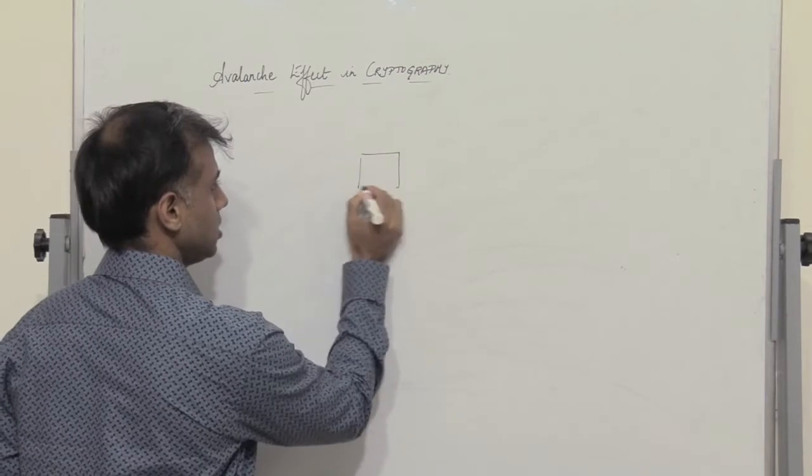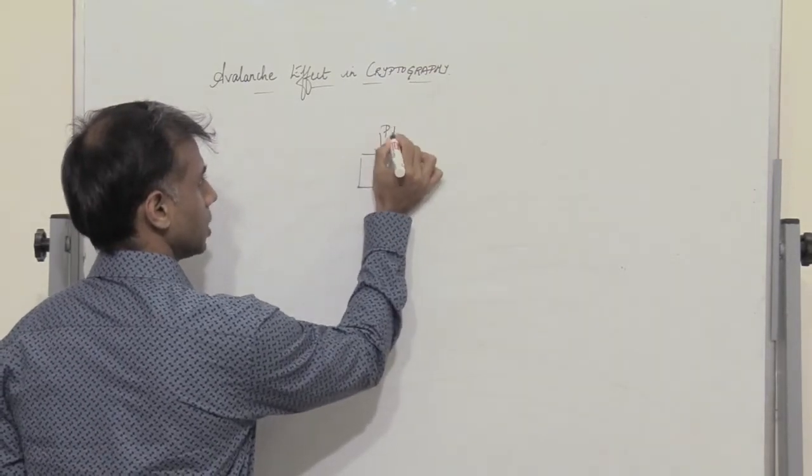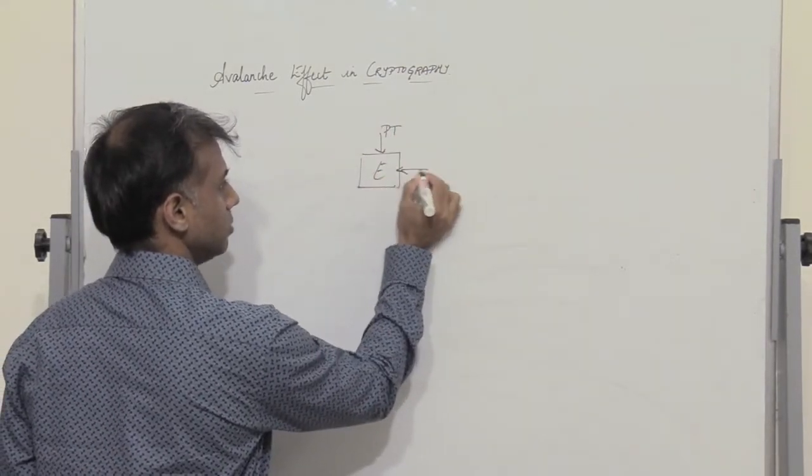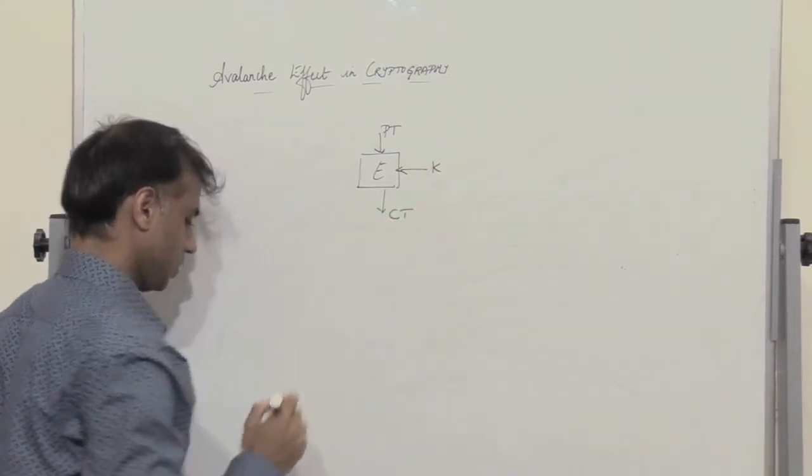Now let us consider a symmetric cipher which takes in the plain text, makes use of a key, and we finally get the ciphertext.